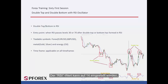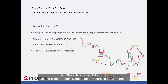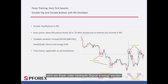RSI value can be set on 14, while two levels are adjusted on 30 and 70. Whenever price crosses level 30 towards the top and level 70 towards the bottom after a double bottom or double top has formed successively, a buy or sell signal will be generated.